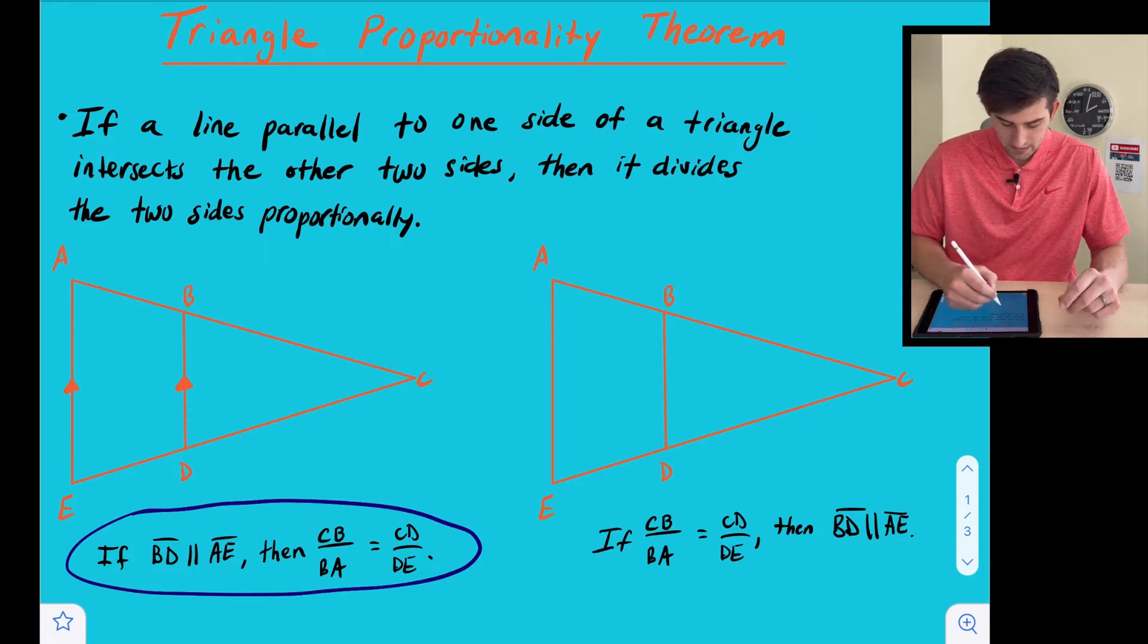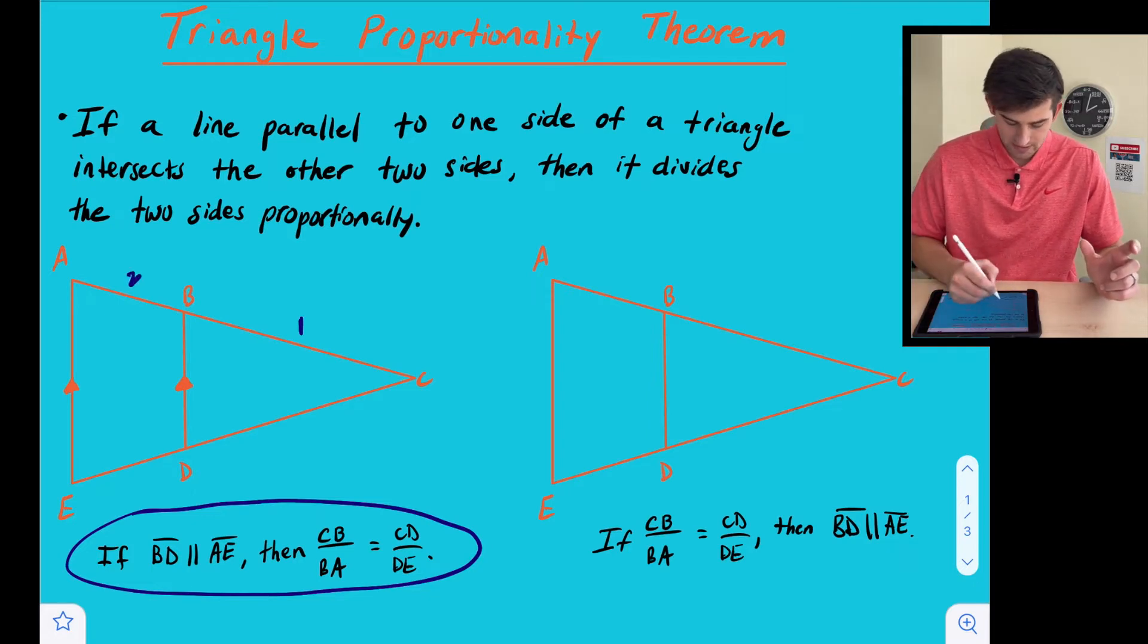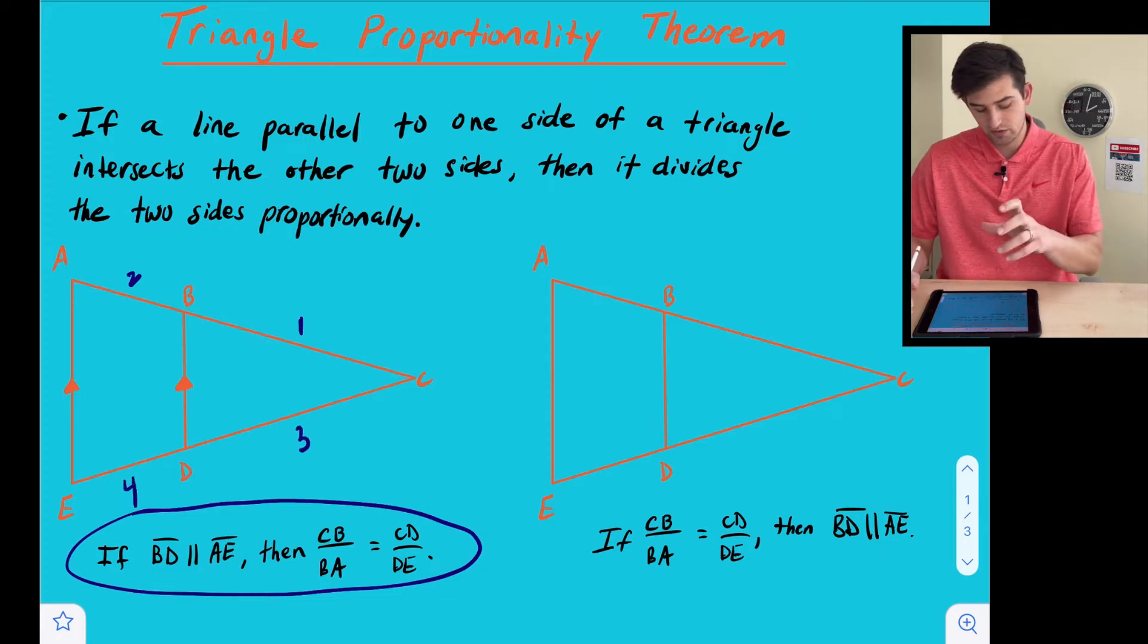Then it says CB, so I'll do like a number one here, CB this small side over BA is equal to CD over DE. Okay, so it's like one over two equals three over four. Okay, so if those two lines are parallel and that's already given to us, then we can say yes it splits the triangle proportionally.